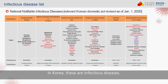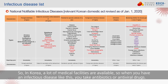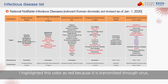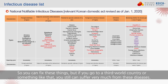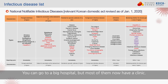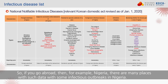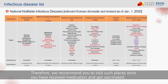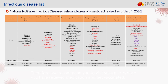In Korea, many medical facilities are available, so when you have such an infectious disease, you take antibiotics or antiviral drugs. But if you go to a third world country, you can still suffer greatly from these diseases. If you go abroad — for example, to Nigeria, where there are many infectious disease outbreaks — we recommend you receive medication and get vaccinated beforehand. I hope you live happily and safely from any infectious disease when you travel. Thank you very much for your effort.